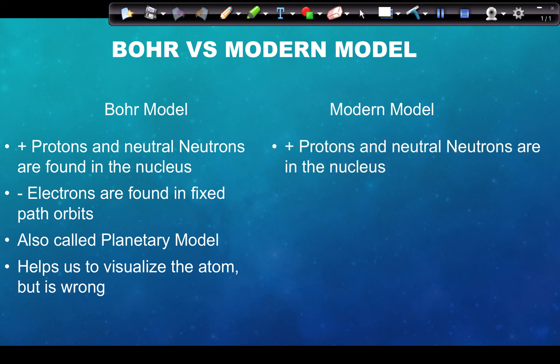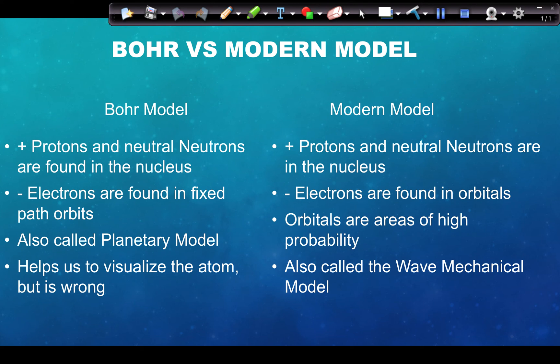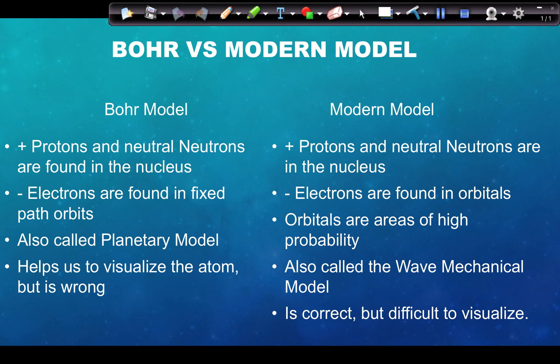The modern model, also called the wave mechanical model, still puts protons and neutrons inside the nucleus, but now we say that negative electrons are found in orbitals — areas of high probability where we will most likely find the electrons. We can't say exactly where they are, but we can say where they most likely will be. The modern model is the most accurate, but is difficult to visualize, which is why the Bohr model is usually used in diagrams.